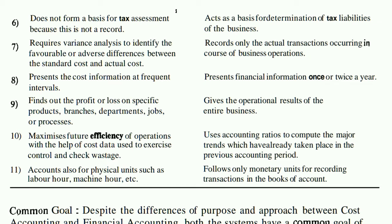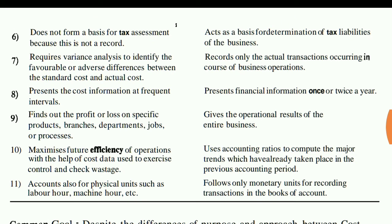The eighth point: cost accounting presents cost information at frequent intervals. You can get your company's product cost information on a frequent basis — weekly or monthly. But financial accounting is not like that, because financial accounting covers a whole year. You have to wait until the end of the year. Financial information is presented once or twice a year — every six months or annually — whereas in cost accounting you can see it weekly or monthly.